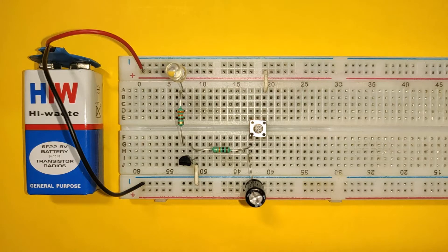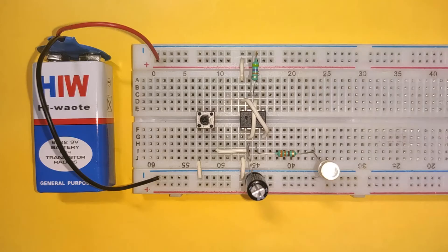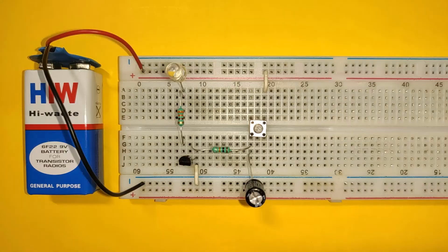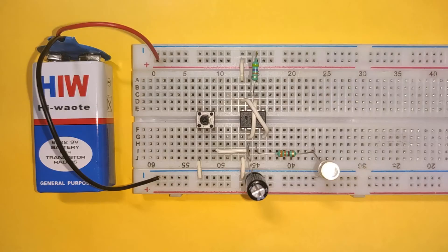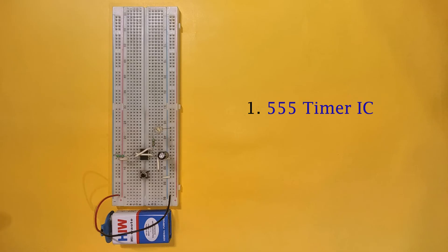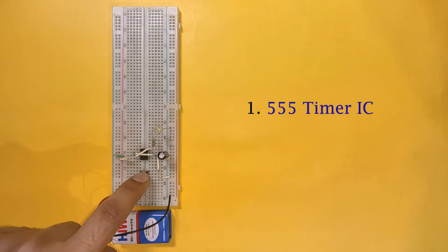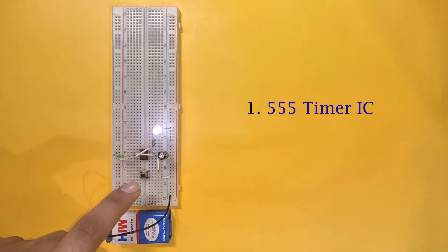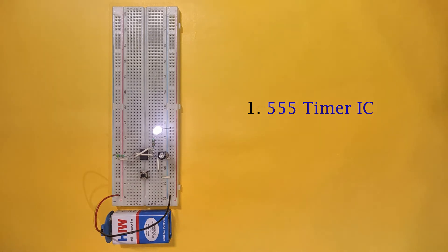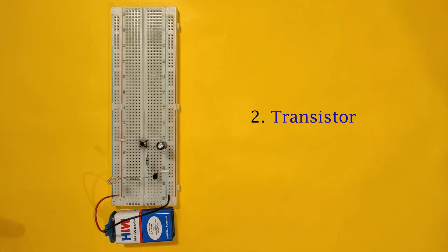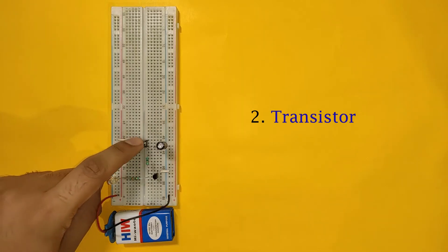Hi everyone! In this video, I am going to show you two ways to make an auto off timer circuit. First, by using a 555 timer IC. And second, by using a transistor.